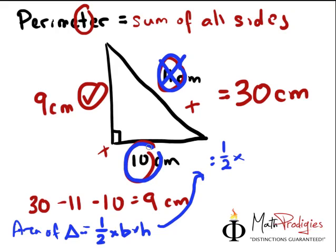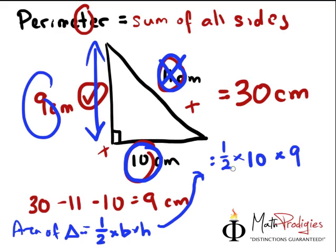The bottom is 10, and the height is how tall it is, which is this one. And hence, you get 9. So, half times 10 times 9, if you cancel this out,